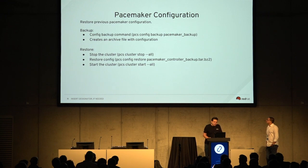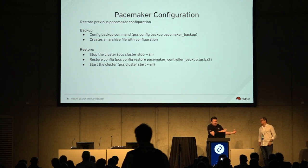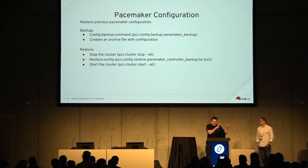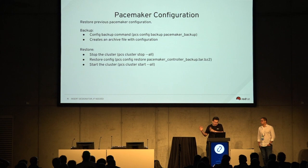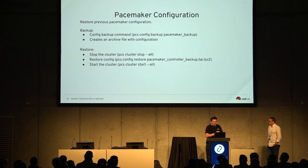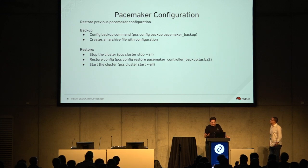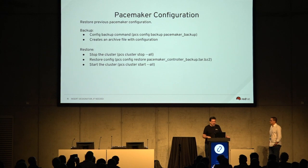For Pacemaker — something we've been testing in the last couple of weeks — during the fast-forward upgrade from OSP 10 to OSP 13, the Pacemaker configuration changes significantly because OSP 10 uses systemd services while OSP 13 uses containerized services. To dump the configuration, use the command `pcs config backup` followed by an archive name, which generates an archive. To restore: stop the cluster, run `pcs config restore` with the archive filename, then start the cluster again.